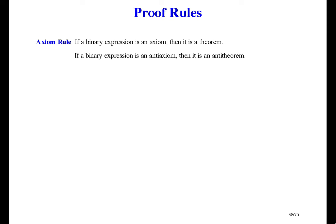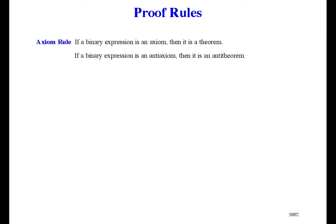If you say it's true, you get one kind of mathematics; if you say it's false, that's another kind of mathematics. In my opinion, there's nothing true or false in mathematics. An application area may have true and false statements, and so you have to design your mathematics to apply to that application area. For example, we include an expression in our mathematics to represent the truth in some applications that when you put quantities together, the total quantity does not depend on the order — there are other applications where that's not true, but we make it an axiom. And according to the axiom rule, it's a theorem, which makes it equivalent to top.